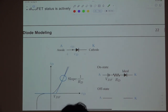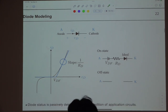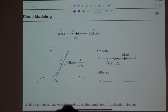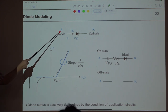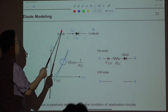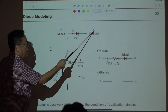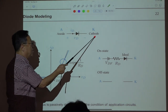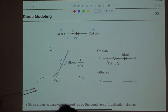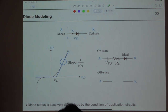Now about the diode. A passive switch is typically a diode. This is the symbol of a diode. A diode is a PN junction — the P part becomes the anode and the N part becomes the cathode. The letter K, not C, is used for cathode. And this is the ID-VD curve of the diode.